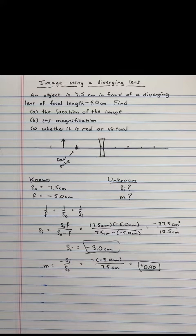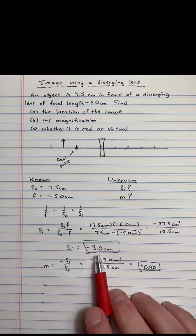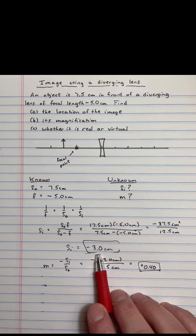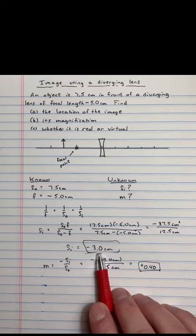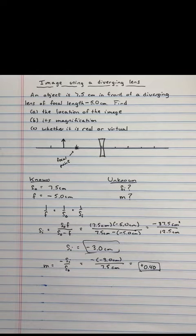Magnification does not automatically mean you get a larger thing in optics. What magnification means is the ratio of the size of the image to the size of the original object, and it's possible to have a smaller image than what the object was. That's a legit possible thing. So that's what we see.